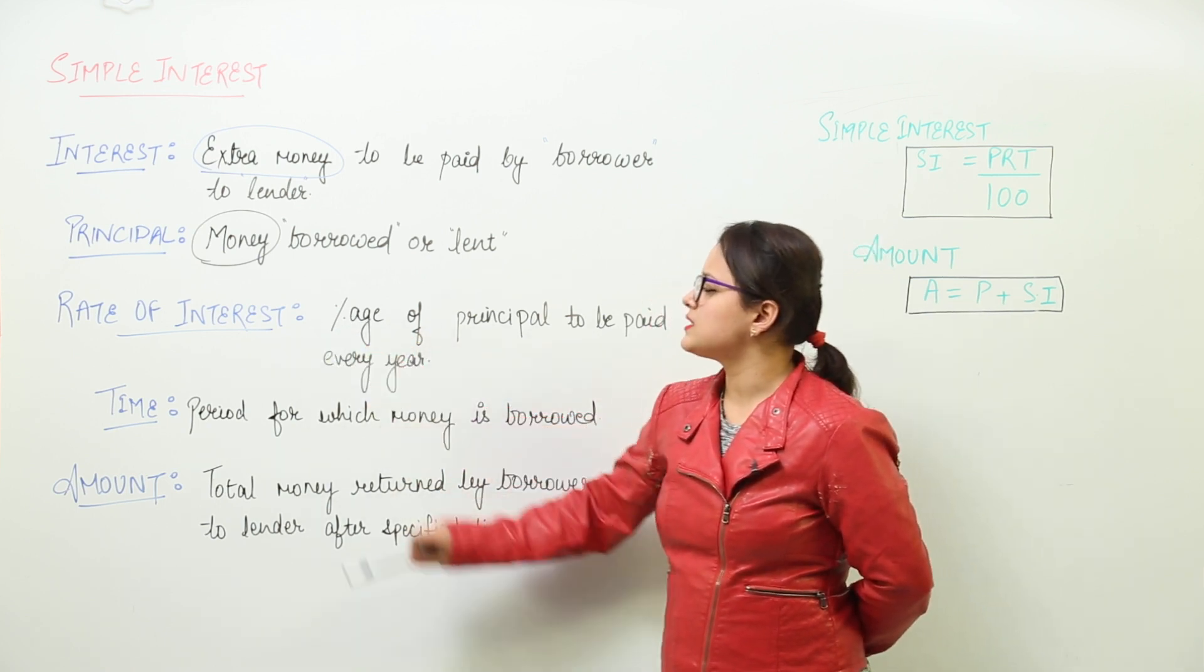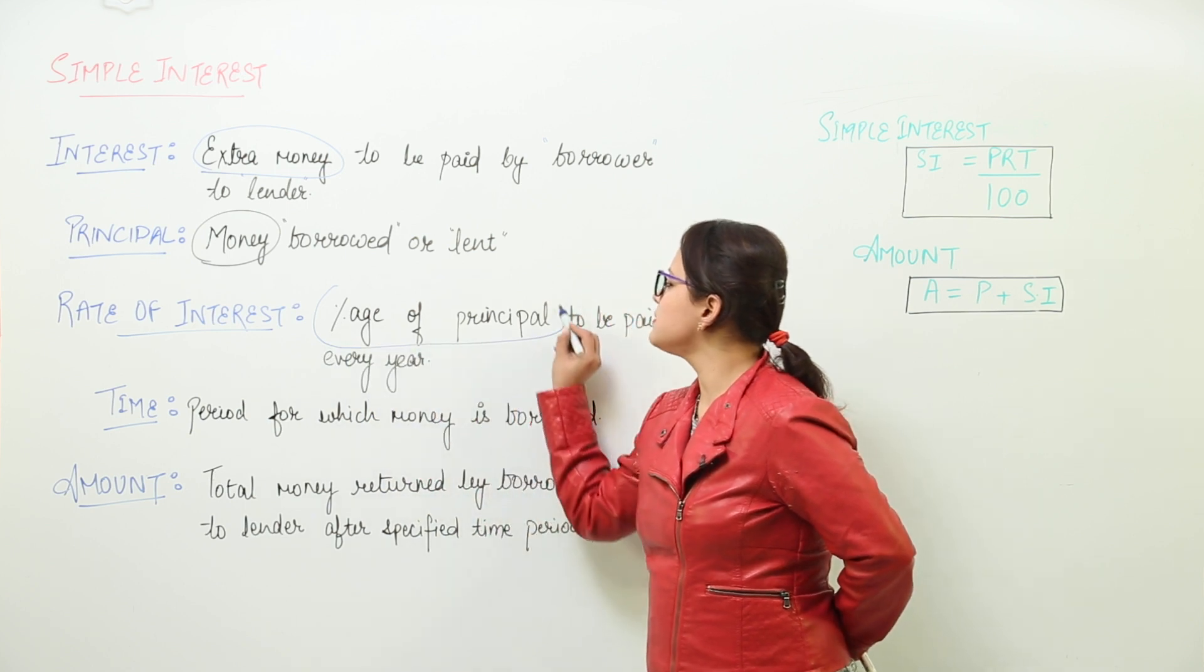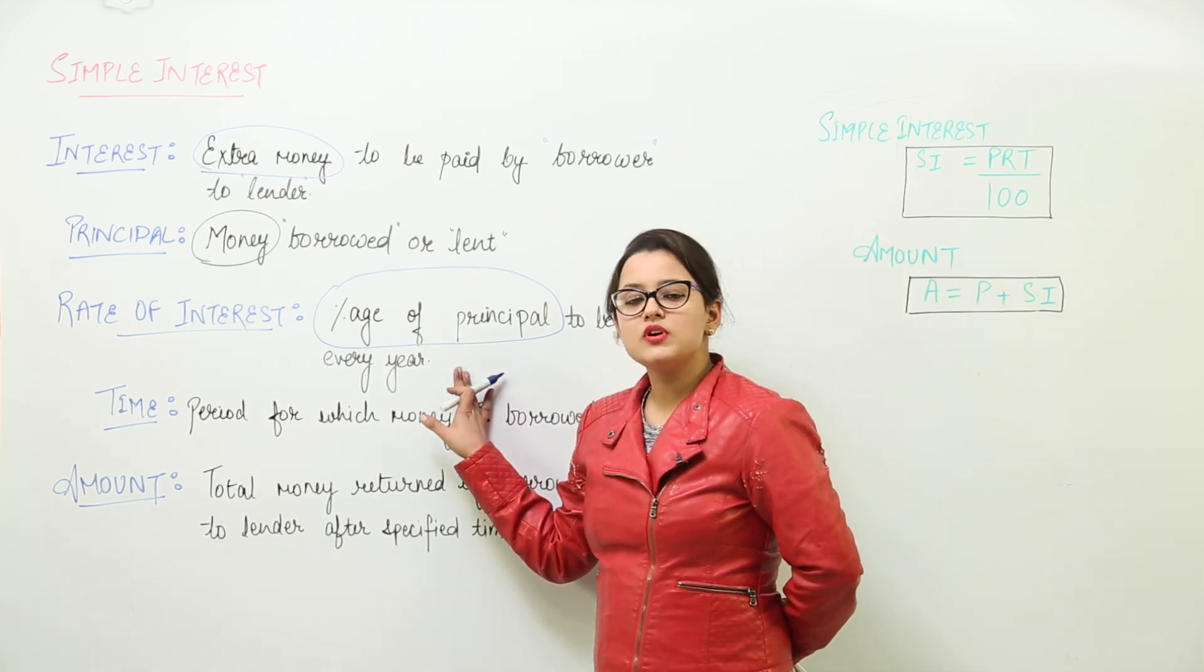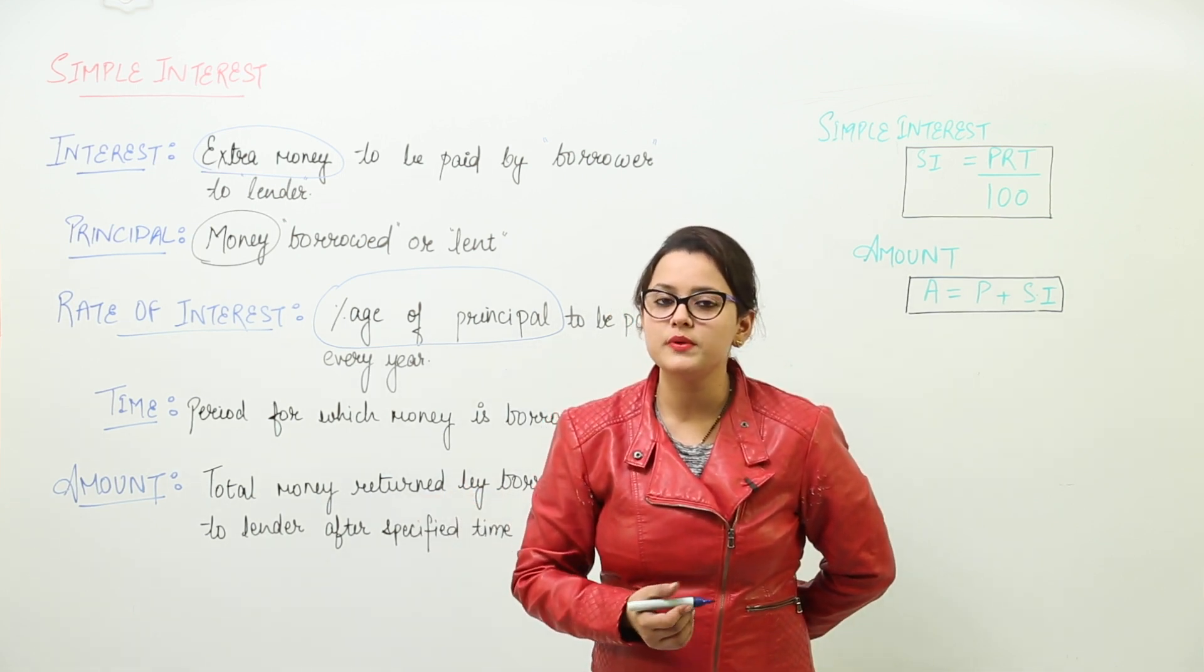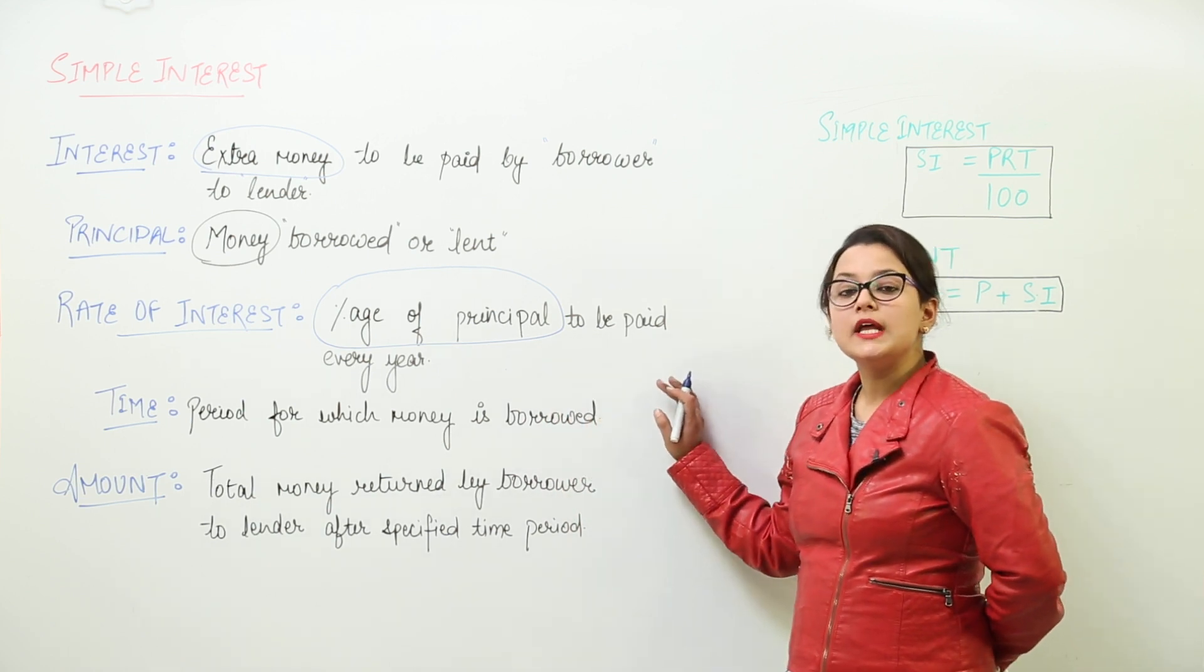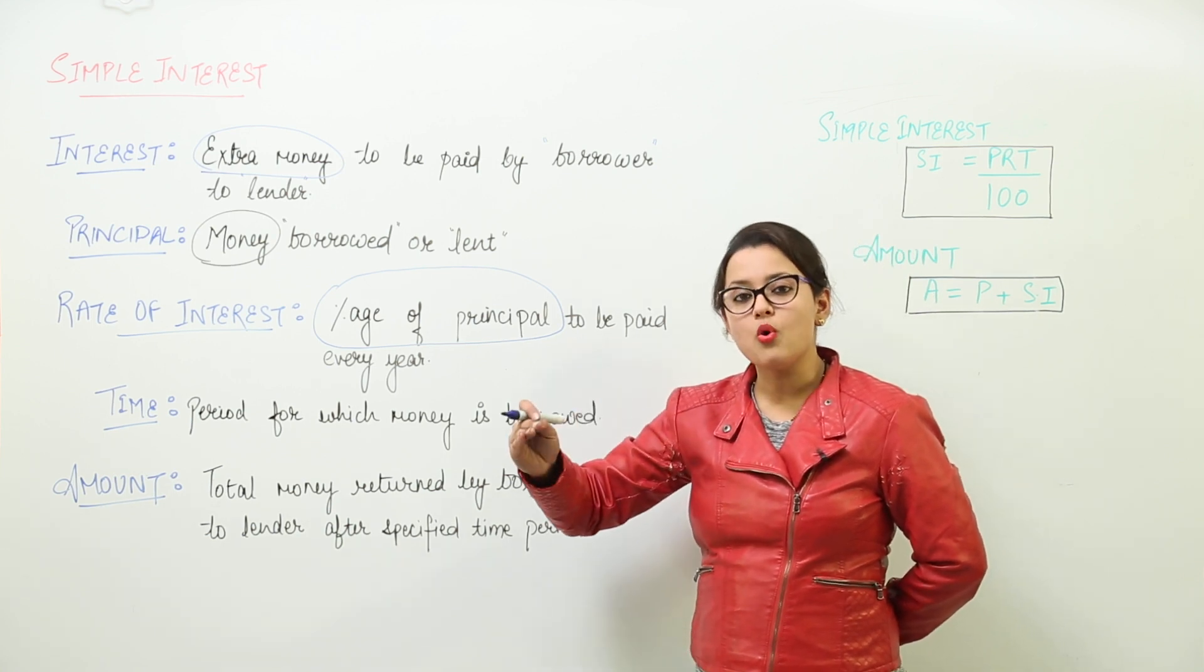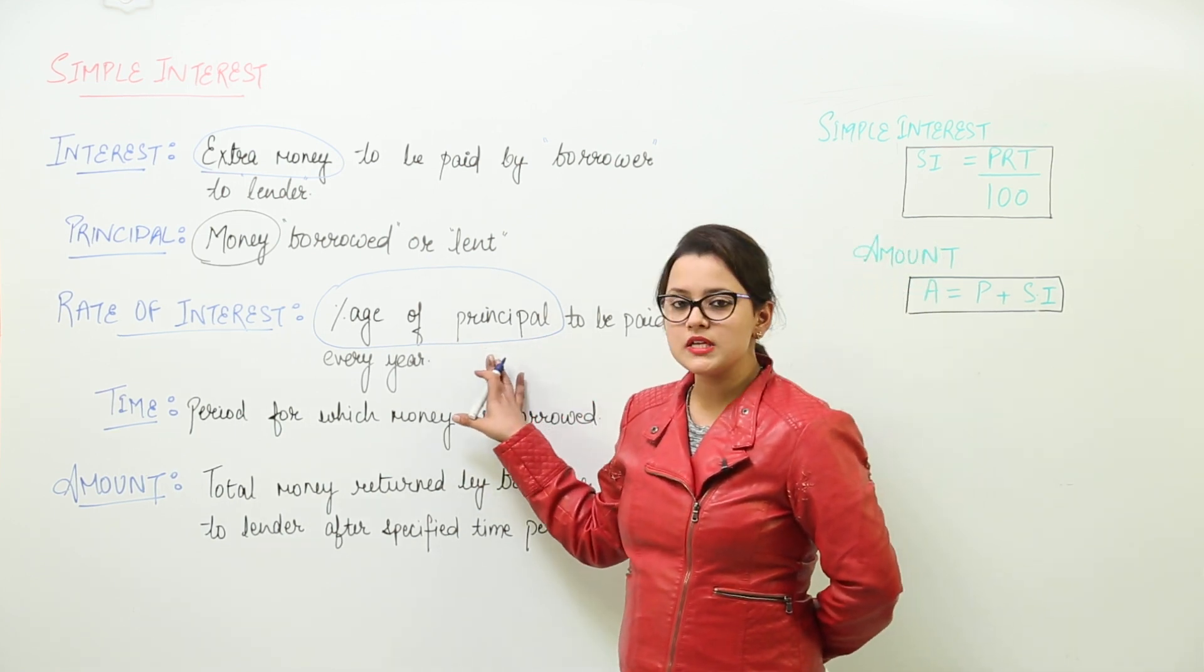Next is the rate of interest. Rate of interest is the percentage of principal. Actually, it is the percentage of principal to be paid every year. Say for example, I have taken 100 rupees, borrowed 100 rupees from my friend. She tells me that I will be charging 10% interest per year. That means every year I have to pay her back 10% more than the amount of principal that was there. So that is the rate of interest.